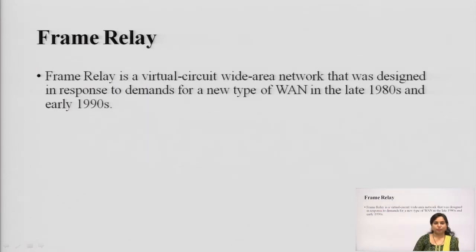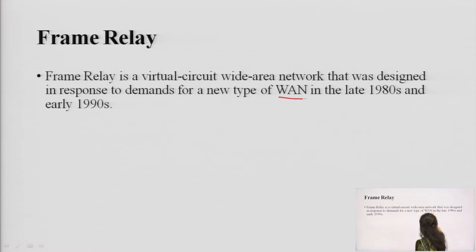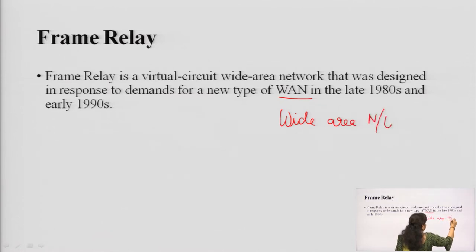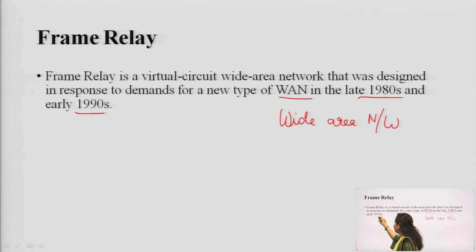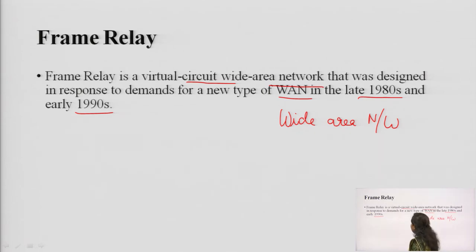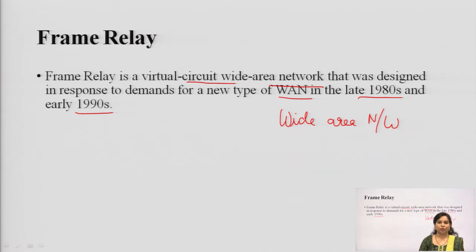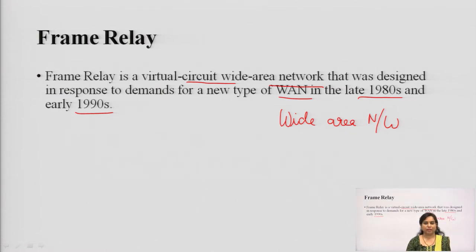What is Frame Relay? With the increasing demand for bandwidth and number of users, a new type of WAN (Wide Area Network) was introduced in the late 1980s and early 1990s. Frame Relay is basically a virtual connected wide area network designed in response to this new type of WAN. It is a kind of virtual circuit — a network that is created virtually, meaning it is not fixed.